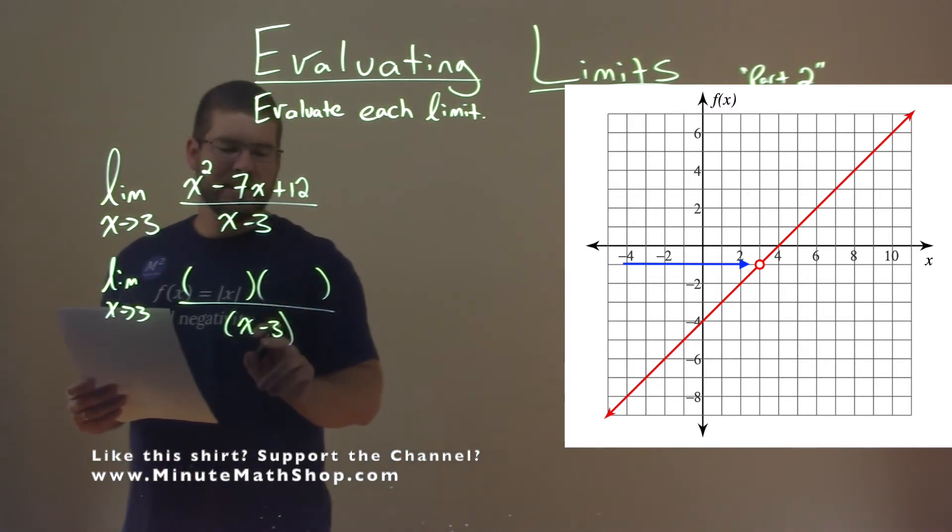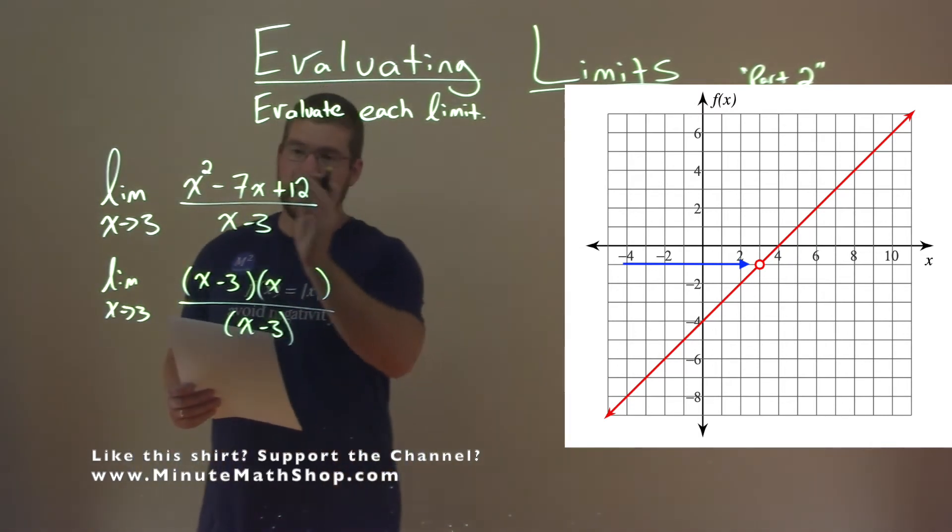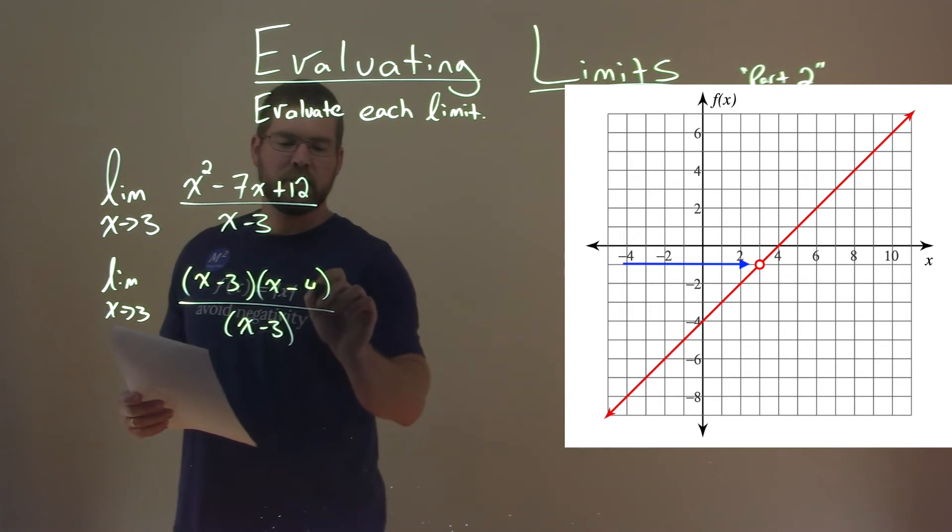We have an x minus 3 here. What two numbers multiply to be positive 12 but add to be negative 7? x minus 3 and x minus 4.